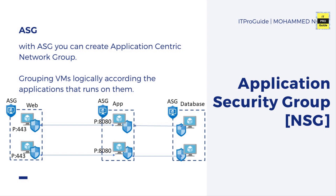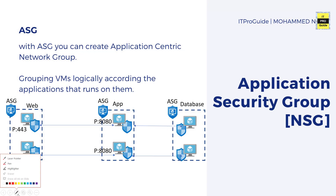In the diagram, you can see the web servers communicate outside on port 443 and internally to the application server on port 8080. If you have three web servers and three application servers, one application security group creation helps you easily apply NSG rules to all virtual machines that are part of it. This approach allows logical grouping of virtual machines based on behavior or what runs inside them, irrespective of their IP address and subnet assignments within a virtual network.